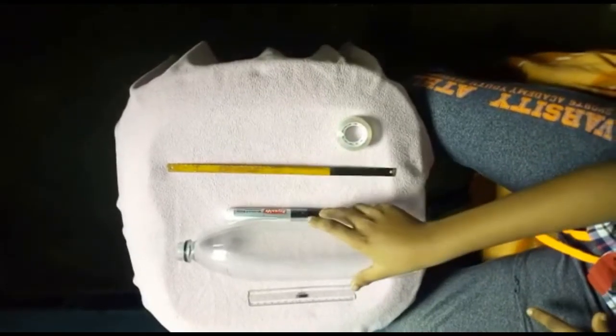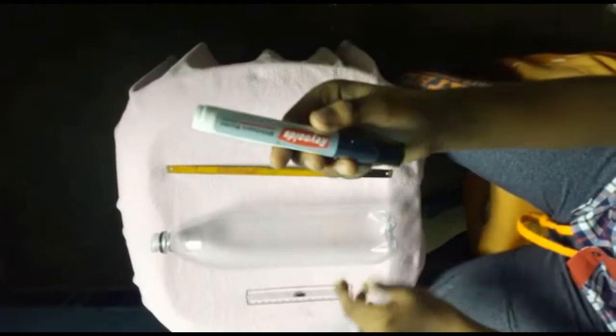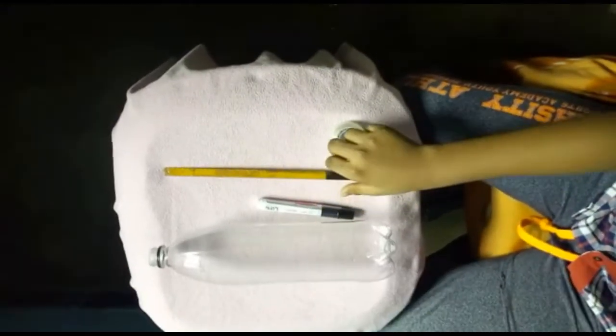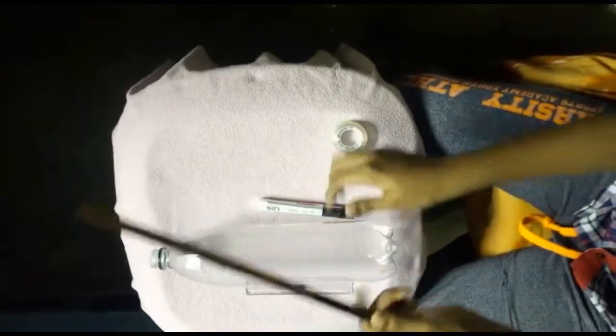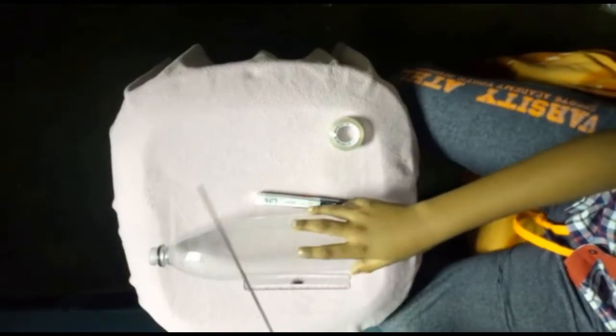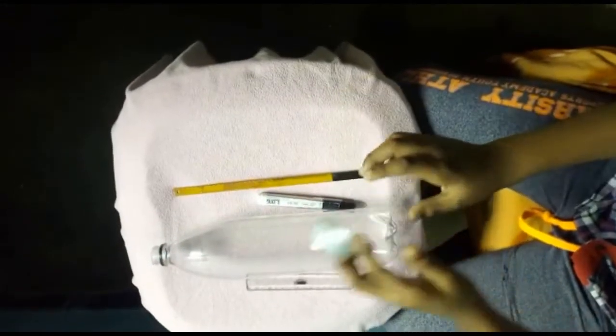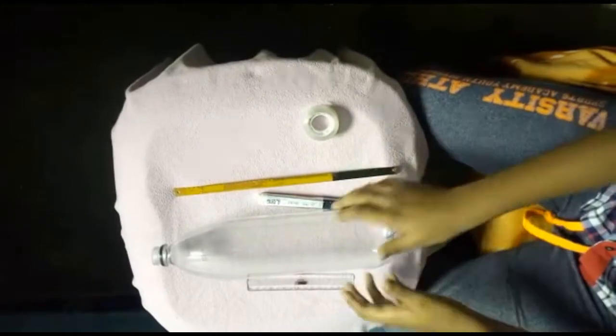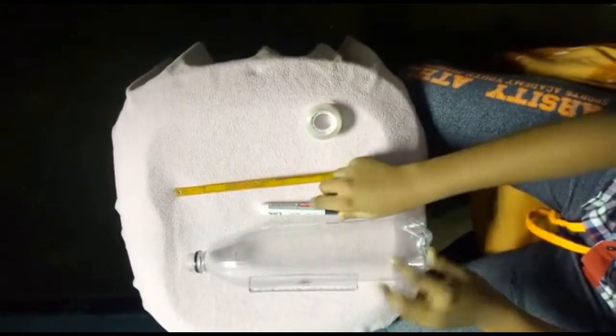For making this rain gauge we need a bottle, a marker, a scale, an axle blade or any blade to cut the bottle, and sellotape. So let's start. First we need to cut the bottle.